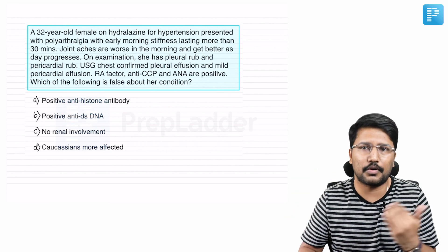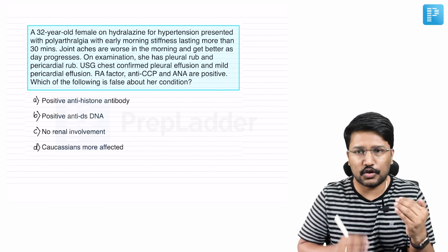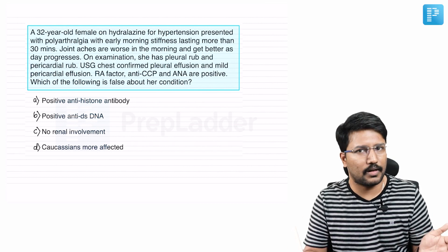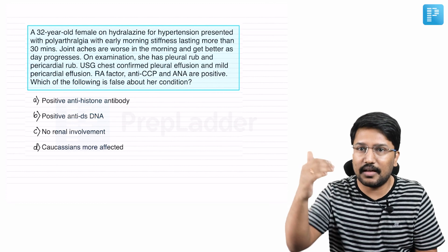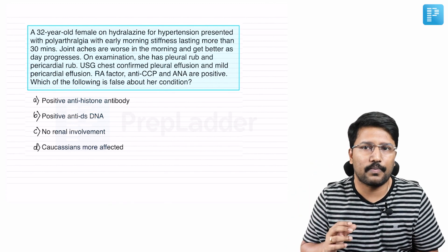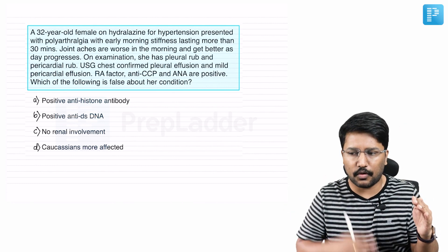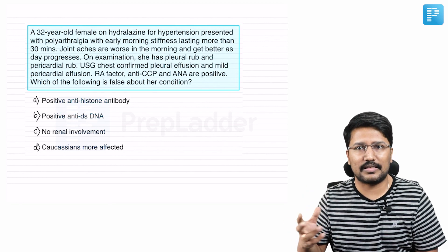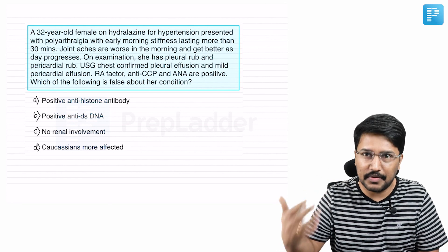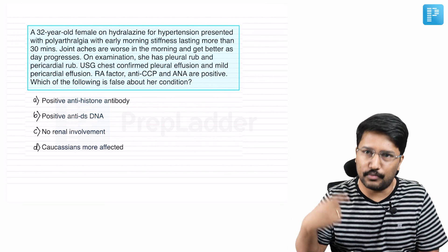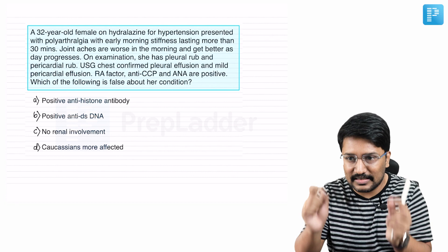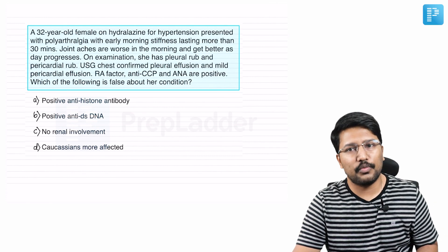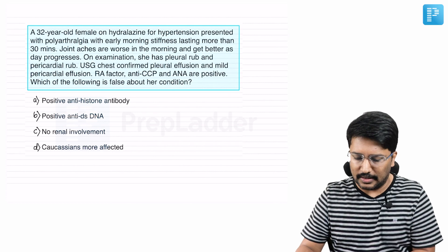For example, if I say anti-CCP positive and a small joint polyarthritis with early morning stiffness lasting more than one hour, then you know I'm talking about rheumatoid arthritis — a simple two-step process. Or it could be multi-layered, as many as six steps. A six-step process would consume a lot of time, so you need to quickly scan through the key points. Solving more MCQs trains your subconscious to catch the diagnosis faster. The PrepLadder NEET-SS QBank 2.0 is designed to help in this process.